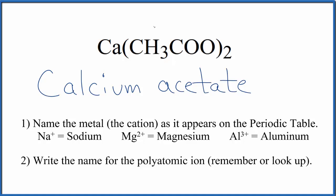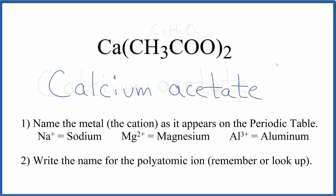And remember that the acetate ion sometimes is written C2H3O2. So this is the formula for Ca(CH3COO)2, calcium acetate.